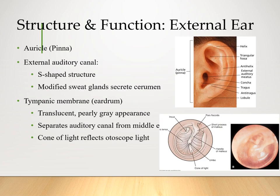In the external ear, we note the pinna — that is the top of the helix all the way down to the earlobe. Our external auditory canal is a tubular structure and it secretes cerumen, or wax. Within, at the end of the auditory canal, is our tympanic membrane that acts as an eardrum. It's translucent and pearly gray, and it separates the auditory canal from the middle ear.